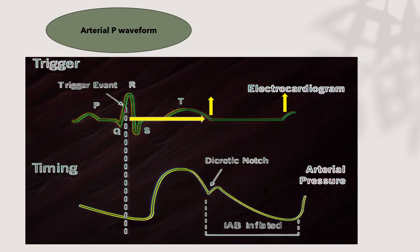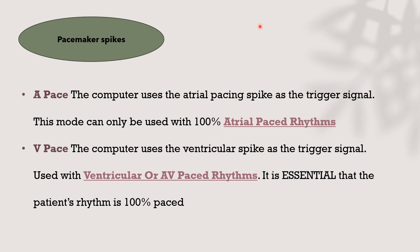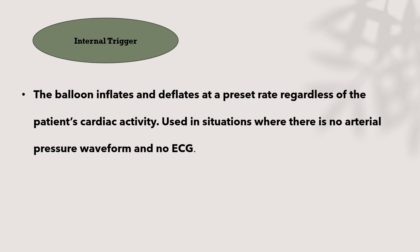As mentioned, the electrical impulse usually precedes the mechanical impulse. Pacemaker spikes are not preferred as a trigger except with consistent pacing. For atrial pacing, atrial pacing spikes are used as the trigger signal only in 100% atrial pacing rhythm. For ventricular or AV pacing, ventricular spikes are used, and the patient must also be 100% paced. The internal trigger inflates and deflates at a preset rate regardless of the patient's cardiac activity, usable when there is no arterial pressure waveform and no ECG — typically set at 40–120 bpm, usually 80 bpm.